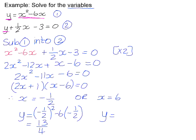And if you substitute 6, you will have 6 squared minus 6 times 6, and that is equal to 0. So your solutions, if we just write them as ordered pairs, will be negative a half and 13 over 4. And here, your solution will be 6 and 0.